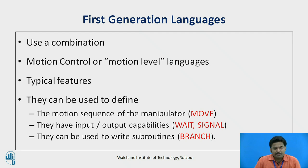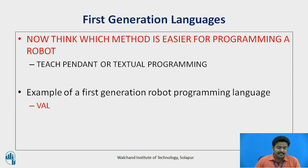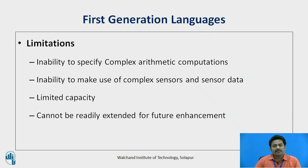These languages can define the motion sequence of the manipulator, have input-output capabilities, and can be used to write subroutines. For programs of low to medium complexity, a person unfamiliar with programming would likely find the teach pendant easier to use, whereas people with computer programming experience would find the first generation language easier. VAL is an example of a first generation robot programming language.